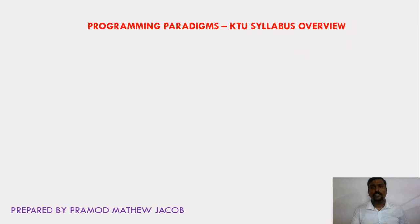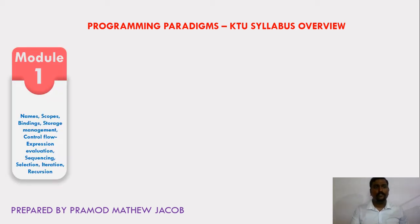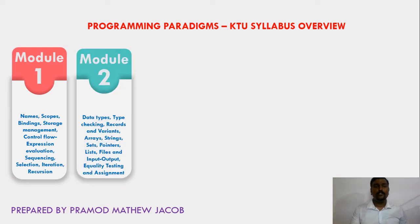Next we will have an overview about the KTU syllabus for Programming Paradigms. The KTU syllabus has six modules. In Module 1, we will learn about how to name variables and functions, the scope of a variable, how binding is done, various memory management techniques available in various programming languages, and typical control flow mechanisms like sequencing, selection, iteration, and recursion.